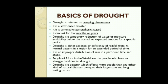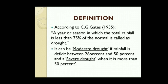Drought is a negative balance between precipitation and water use. People of Africa are the ones who have to struggle harder due to drought. Drought is a disaster which affects more people than any kind of natural disaster owing to its large-scale and long-lasting nature. According to CG Gates, a year or season in which the total rain is less than 75% of the normal is called a drought. It can be a moderate drought if rainfall is deficient between 26% and 50%, and a severe drought when it is more than 50%.